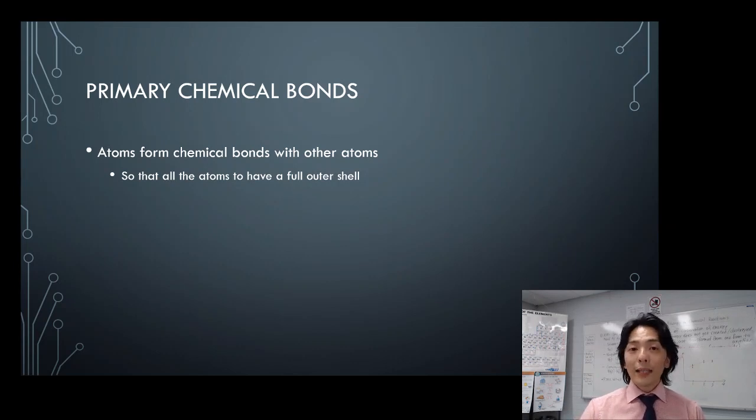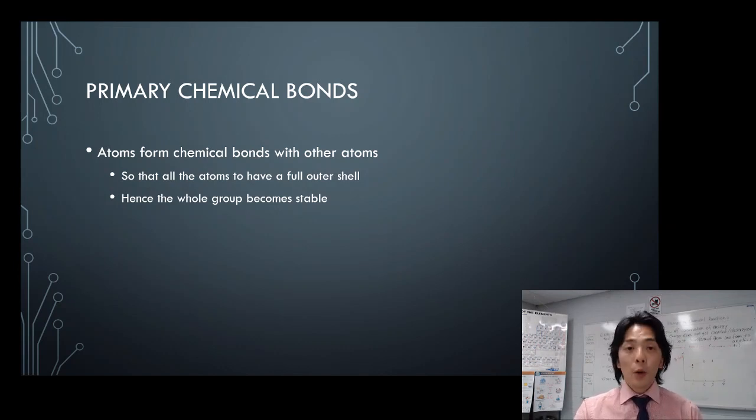If all the atoms have their valence shell becoming full, then the overall molecule or the smallest component of an ionic compound becomes stable as well.